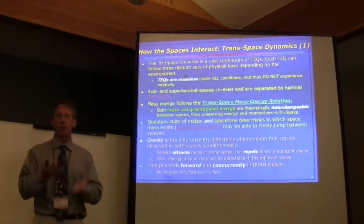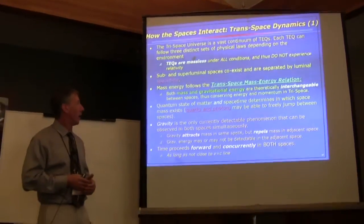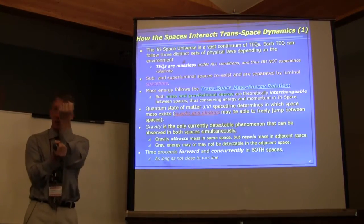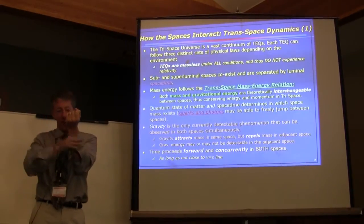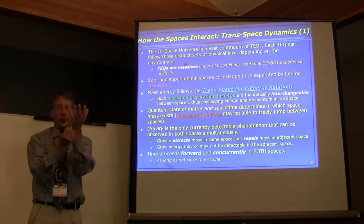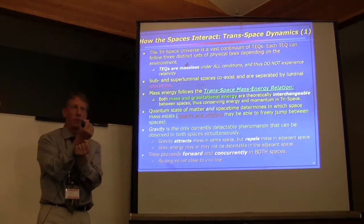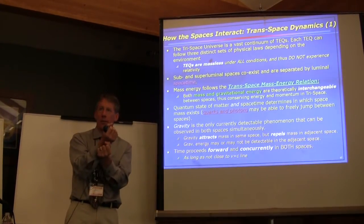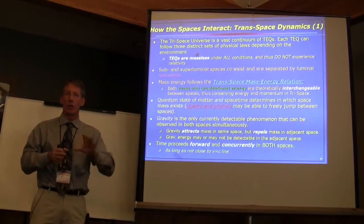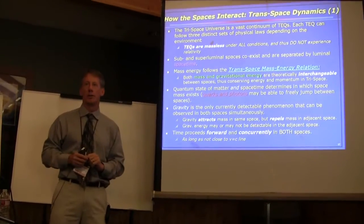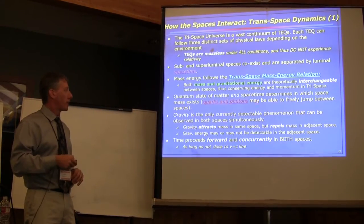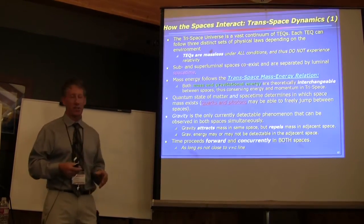The trans-space mass-energy relation is where mass energy and gravitational energy are theoretically interchangeable between these two conditions. If one is subluminal and you have a gravitational signature in space, and you switch velocity so you remove yourself from subluminal existence and enter superluminal existence, your gravitational energy switches as well. In the grand scope of the universe, you've conserved momentum and energy even though you may no longer be physically observable in one space. The quantum state of matter and space-time determines in which space mass exists.